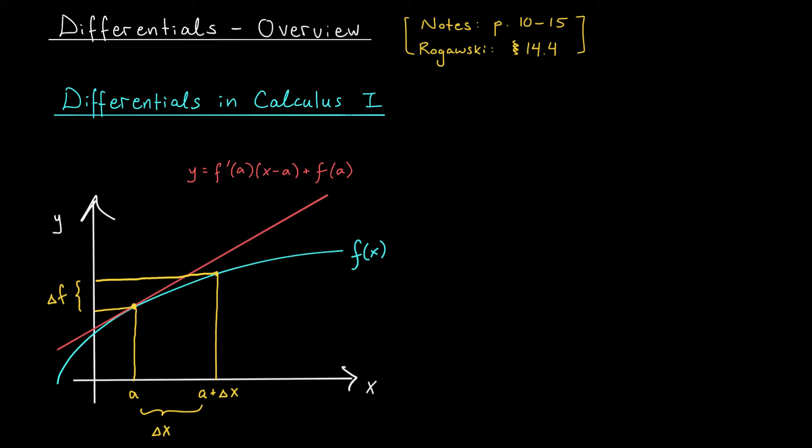Well, I guess we could calculate this change exactly by computing the function's value at a plus delta x, and then subtracting off the value at a, but hold on. You might remember from the last video that plugging in certain inputs can be a real pain. If this function f(x) is quite complicated, we might not want to calculate its exact value at a plus delta x.